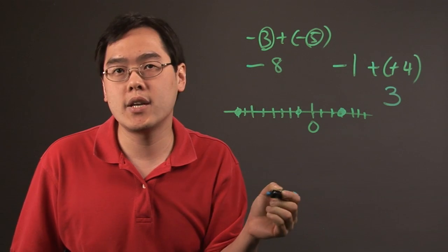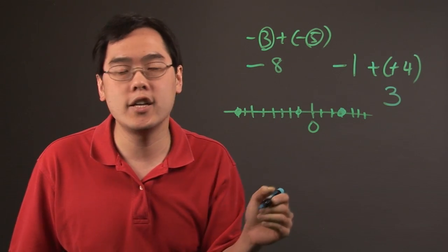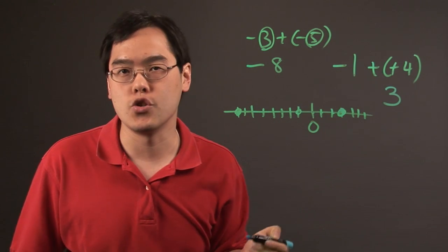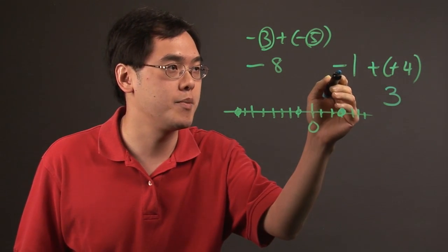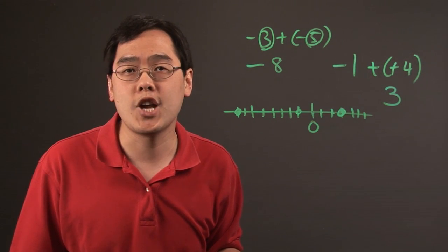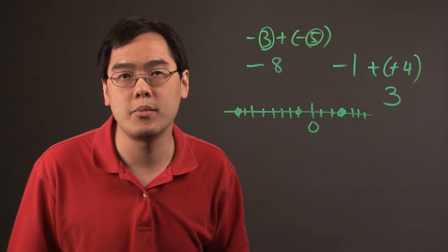So when you're adding two negative numbers, you're making the number more negative. But when you're subtracting two negative numbers, you take the sign of the larger value. Because one of them is going to be negative, the other one is going to be a positive. So I'm Jimmy Chang, and that's addition and subtraction of negative numbers.